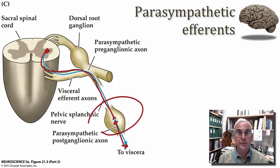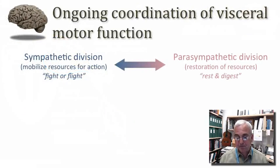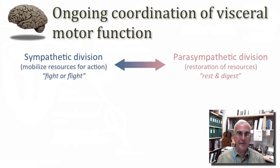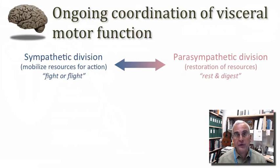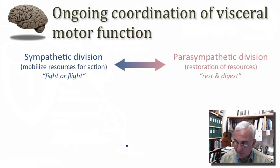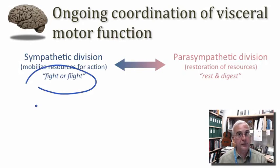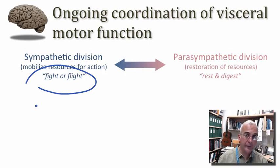Before we move on and consider more central aspects of visceral motor integration, I want to make a couple of points of emphasis. I want you to understand that there's always coordination of activity in our sympathetic outflow and our parasympathetic outflow. Yes, they do represent rather extreme ends of a continuum of function, but that function is a continuum. While sometimes it's helpful to emphasize that our sympathetic division is about fight or flight or the mobilization of resources for action, I want you to understand that that's not the only circumstance in which there is outflow from our sympathetic division.